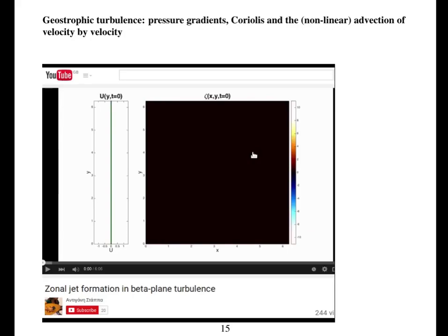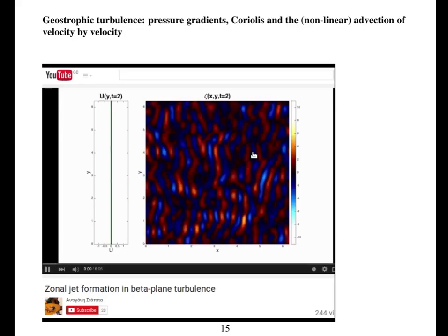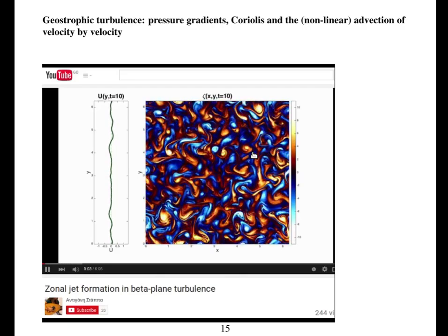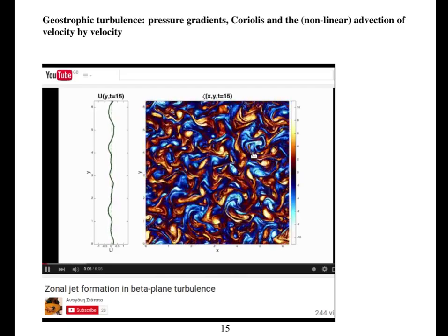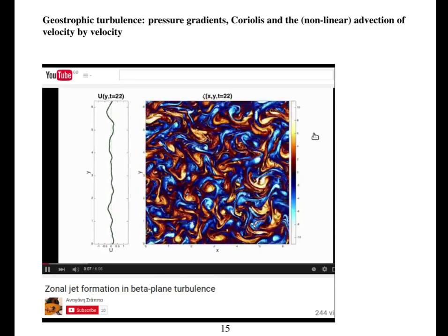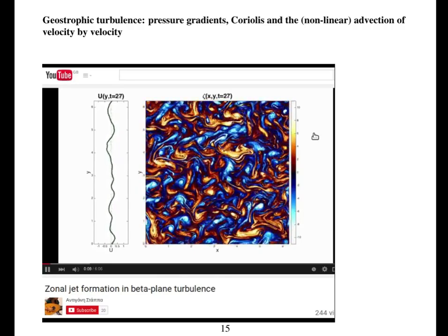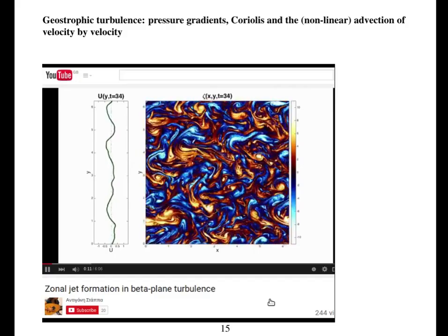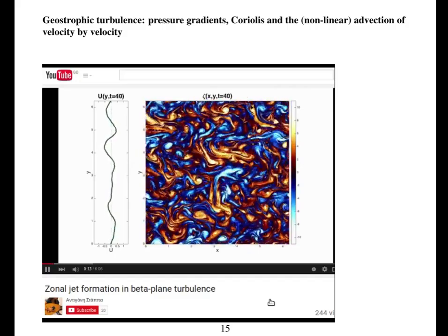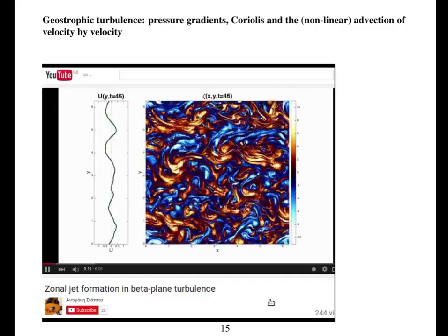If, as well as Coriolis and pressure gradients, if we have non-linear advection, so the whole of the Lagrangian derivative of u, then we get geostrophic turbulence. And here's a nice animation of zonal jets that form due to geostrophic turbulence.